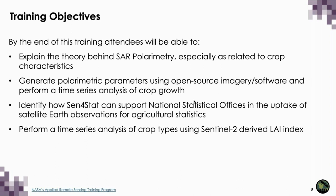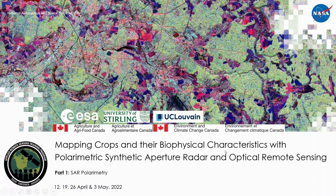I will now hand it over to Sarah Banks from Environment and Climate Change Canada to provide the theoretical background using SAR polarimetry for agriculture. Hello everyone, my name is Sarah Banks. I'm a physical scientist with Environment and Climate Change Canada and a PhD student in the Department of Geography and Environmental Studies at Carleton University in Ottawa, Canada. Today I will be presenting the first of four sessions on mapping crops and their biophysical characteristics with synthetic aperture radar and optical remote sensing.